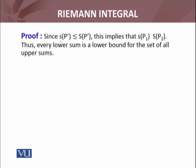Since s(P'), lower sum, is always less than or equal to upper sum of any partition—this is always true—this implies that s(P₁) ≤ S(P₂). Thus, every lower sum is a lower bound for the set of all upper sums. This means that for the set of all upper sums, every lower sum is a lower bound.